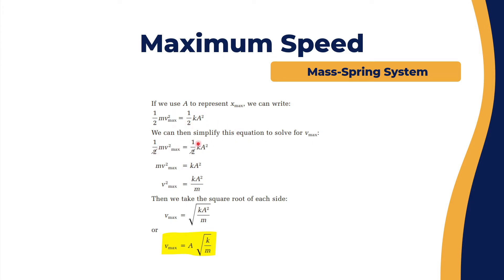We can start to simplify the equation. The one-half cancels on both sides, giving us m times v_max squared equals k times A squared. Therefore, v_max squared equals k times A squared over mass.